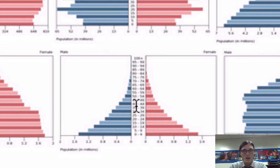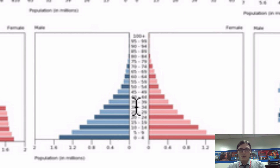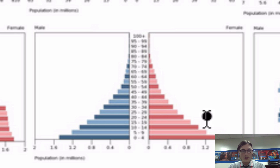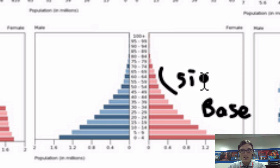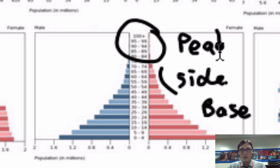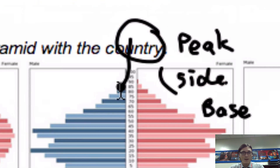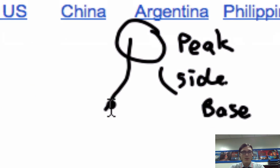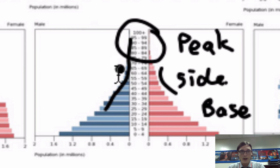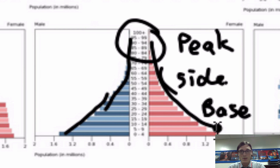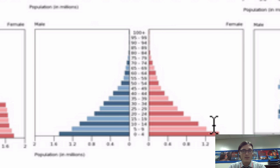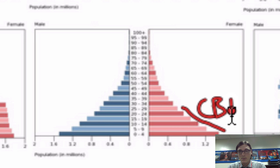Let me zoom into this one right here because it's the most obvious population pyramid. There are three things that I want you to be able to identify on a population pyramid: the base down at the bottom, the sides, and the peak. When on the exam you have to identify or analyze a population pyramid, you can do so by looking at these three aspects, and they all tell you something different. The base tells you how high the birth rate is, so the CBR.